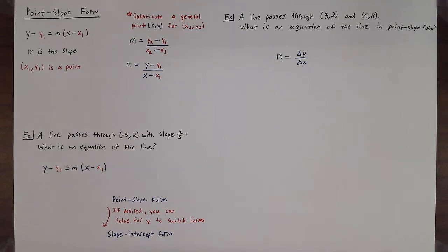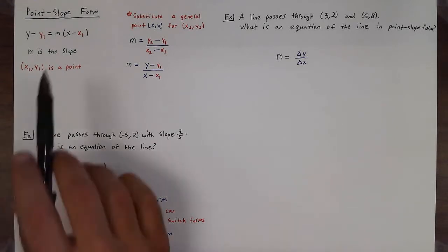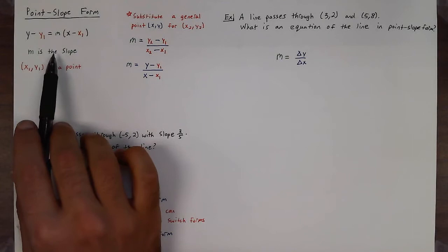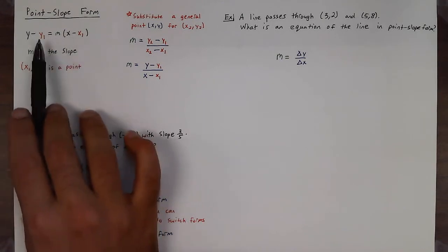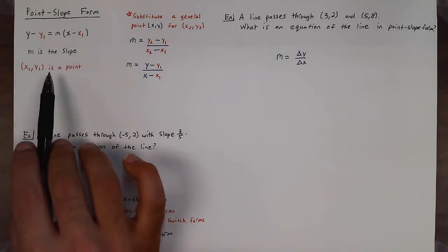In this video we are going to learn about the point-slope form for lines. The form is y minus y1 equals m times x minus x1, where m is the slope of a line and x1, y1 is a general point on the line.